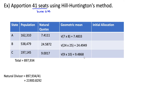Next we find our initial allocations by taking each natural quota and comparing it to its geometric mean. If it's less than the geometric mean, we round down; if it's equal to or greater, we round up. So 7.4111 is less than 7.4833, giving an initial allocation of 7. The next quota, 24.5, is greater than its geometric mean of 24.49, so this rounds up to 25. And 9.0 is less than its geometric mean of 9.48, so this rounds down to 9. If we add all of these up, we get 41, which is the correct house size, so we're done.